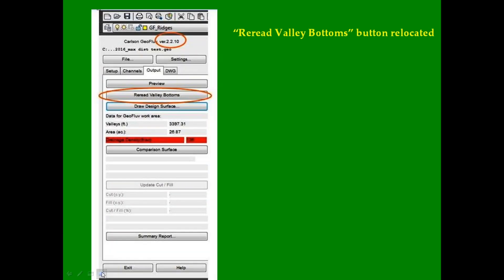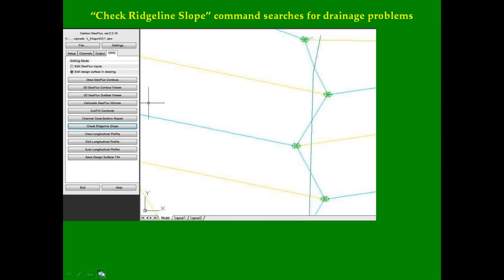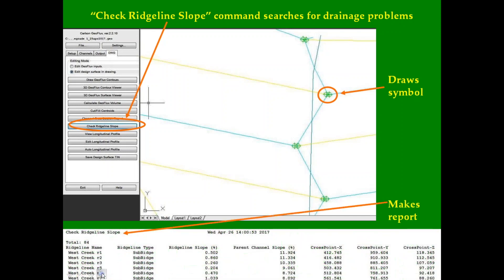We've moved the reread valley bottoms button to below the preview button to help smooth workflow when making iterative edits. The new check ridgeline slope command searches for drainage problems that can result from conflicts between the user-specified valley orientation and the surrounding topographic elevations. It can draw a symbol on the design at the identified problem location and make a report that helps you understand the changes needed to fix the problem.